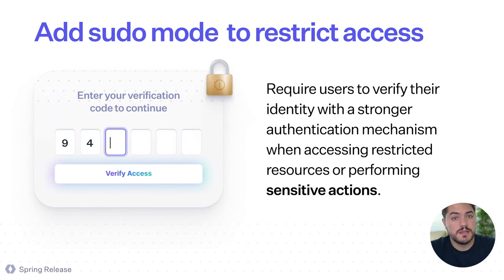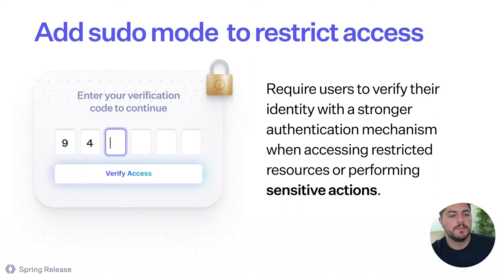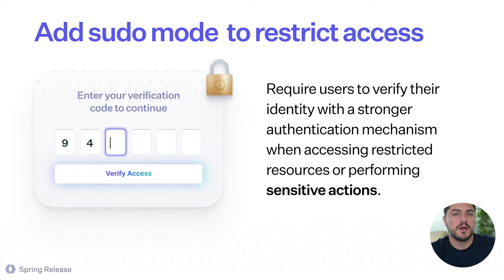The cool thing about this API is that it enables you to build things on top of the login flow. You can build things like sudo mode, which is a way for you to restrict access to certain resources. If the user is going to a page with a very sensitive resource, or they are doing an action that might be destructive, you can present a confirmation page before they execute that action to confirm that the user is who they say they are. You can leverage the MFA API to do that.